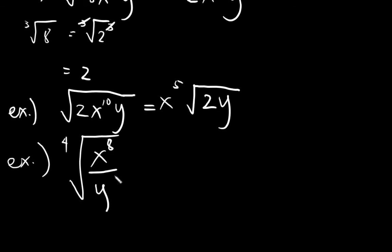So another example, say we have a fraction amount, the fourth root of x raised to 8 over y raised to 4. So what would happen here? 8 can go out because 8 divided by 4 is 2.